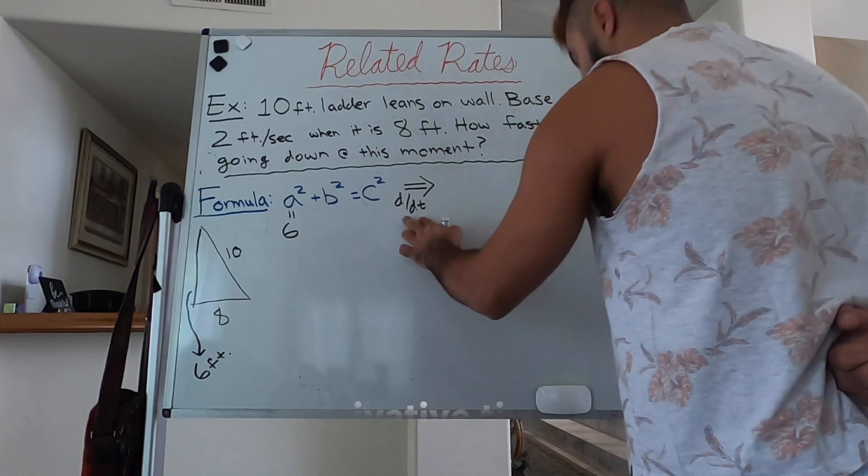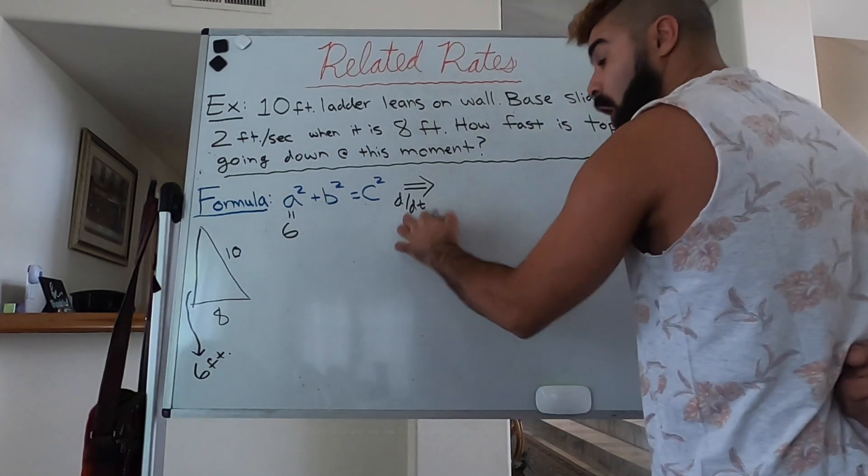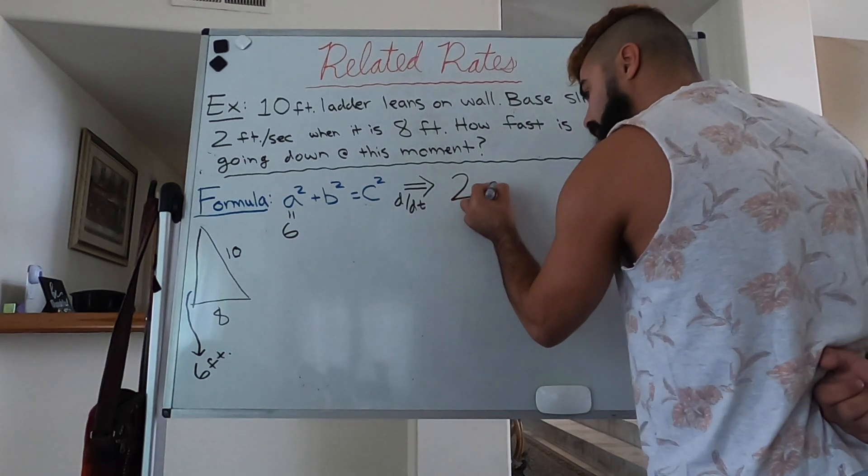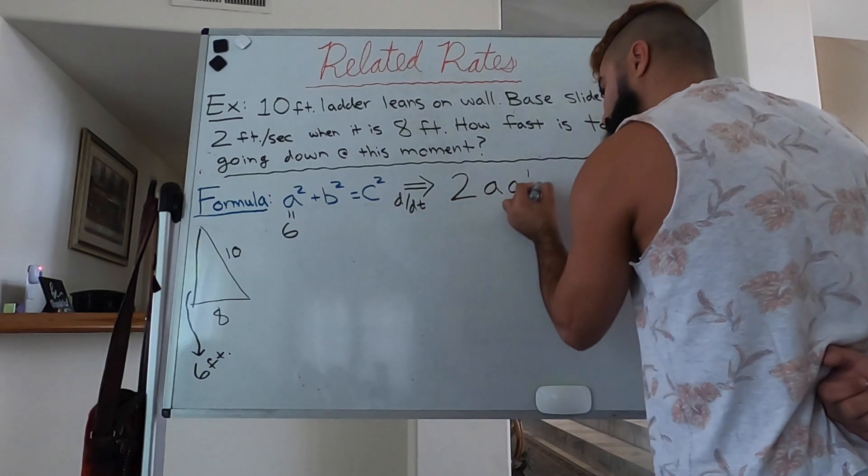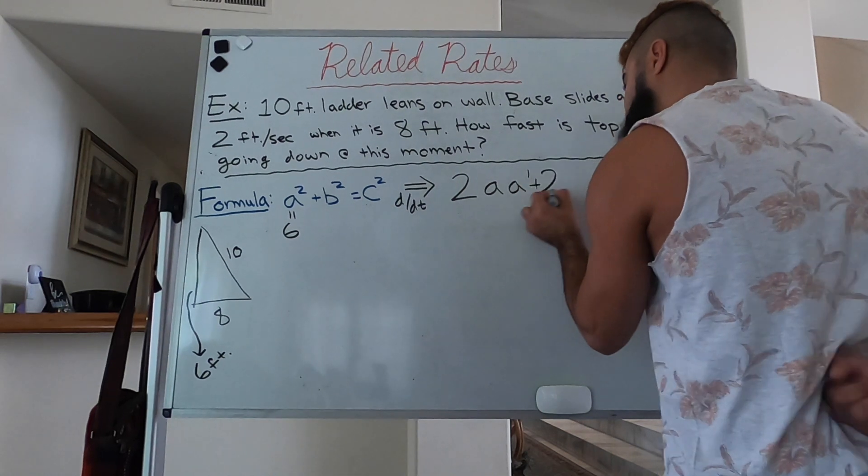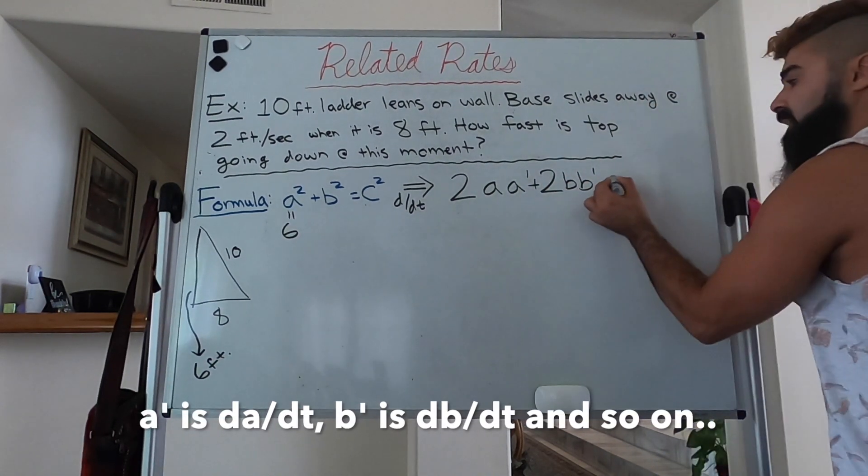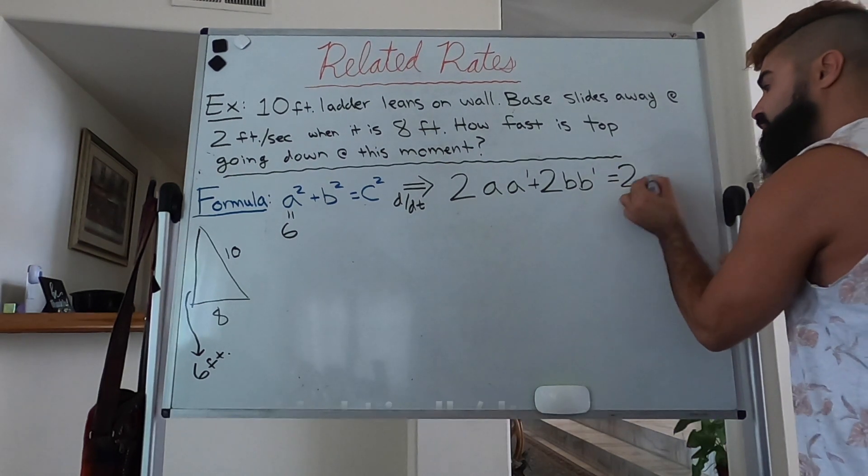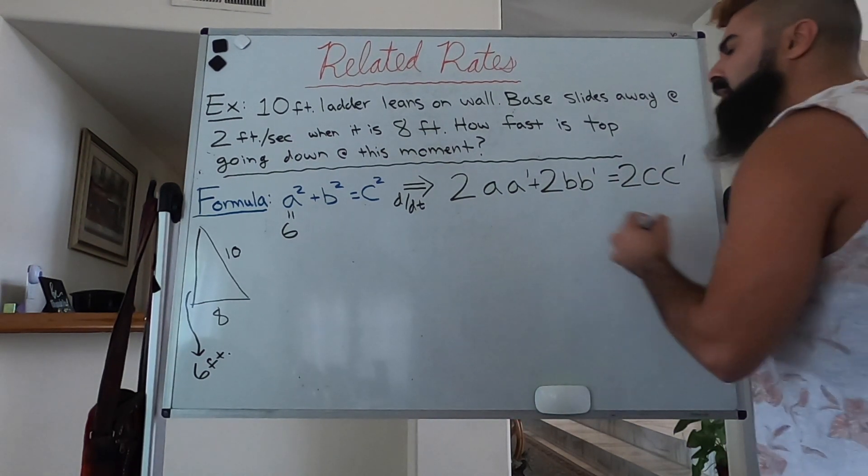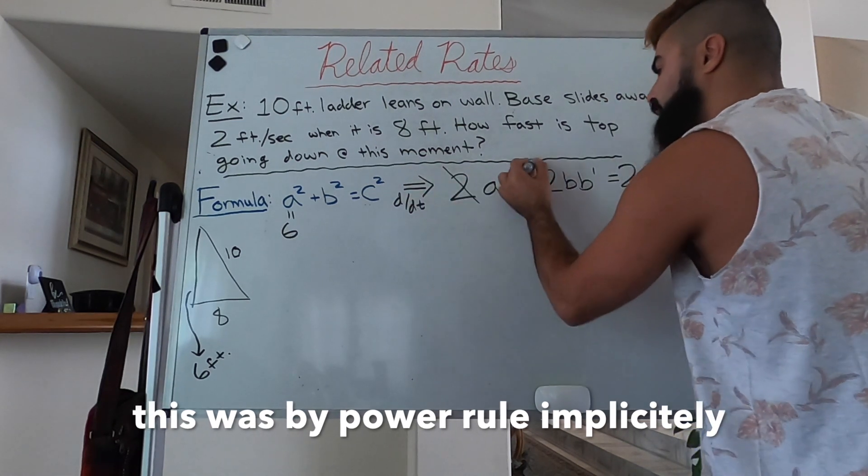All that happens is we get 2a·a' + 2b·b' = 2c·c'. We can go ahead and cancel out all of our 2s if we'd like.